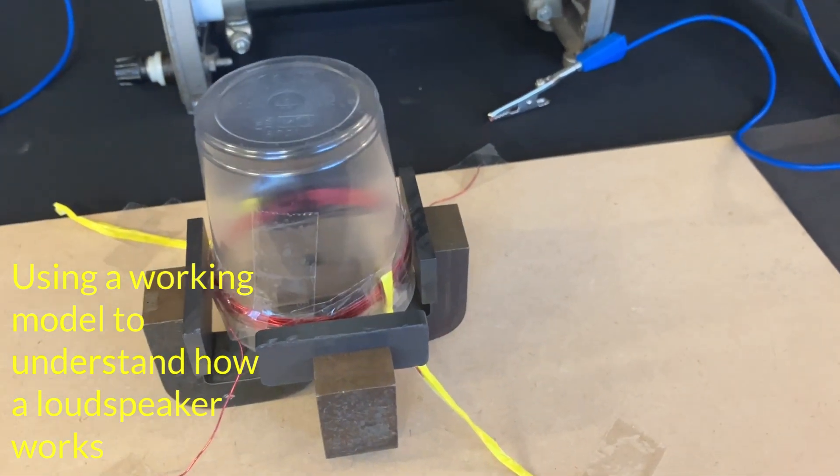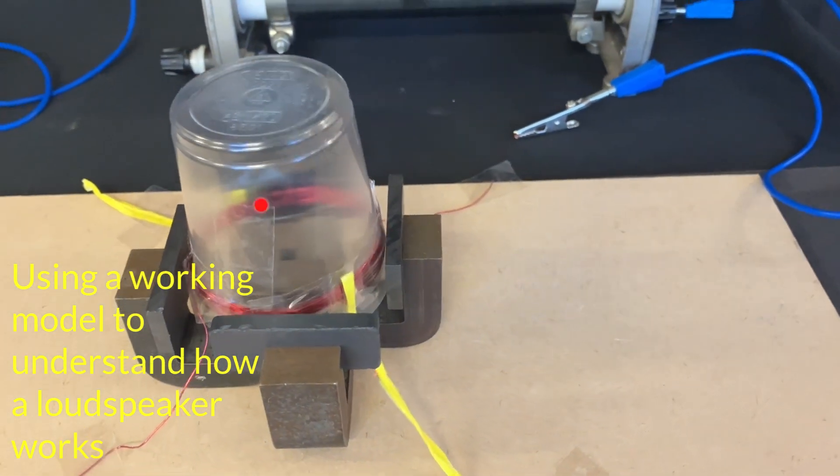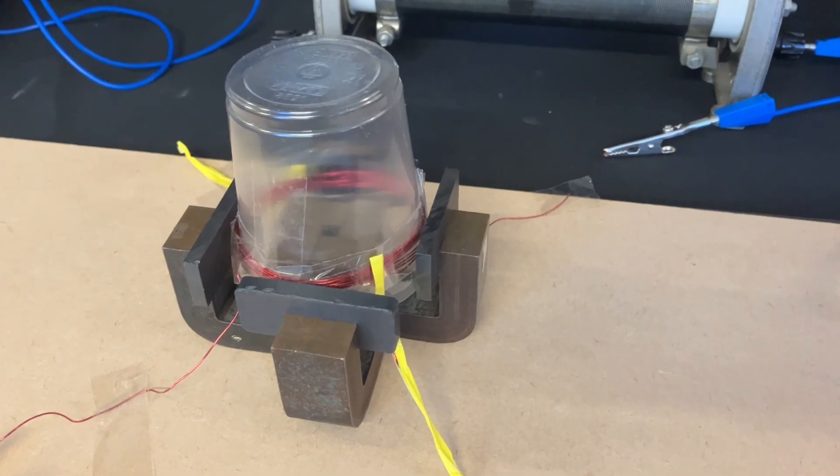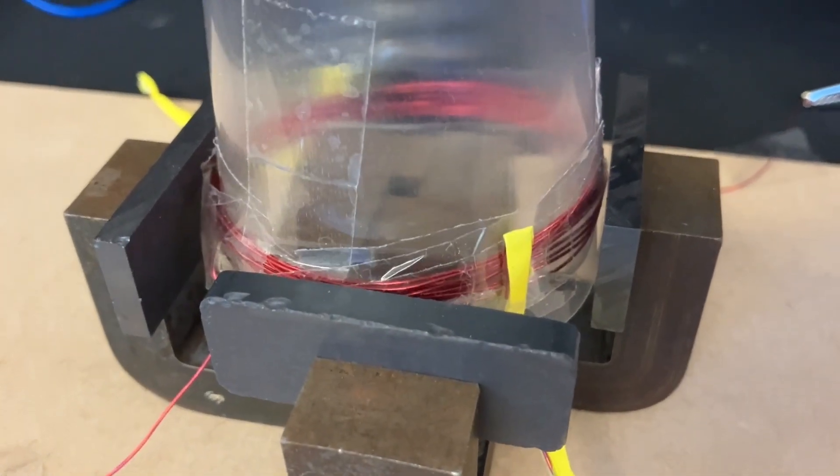In this video we're going to use this working model loudspeaker of a coil of wire wrapped around a plastic cup in between some magnets to understand how a loudspeaker works.